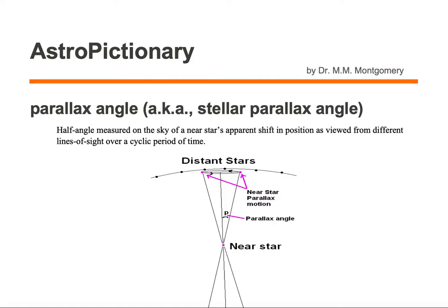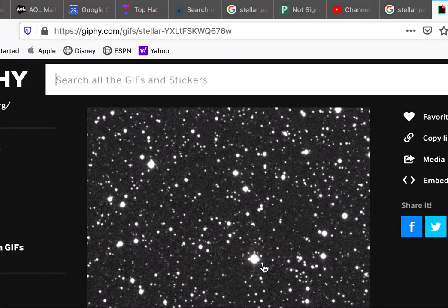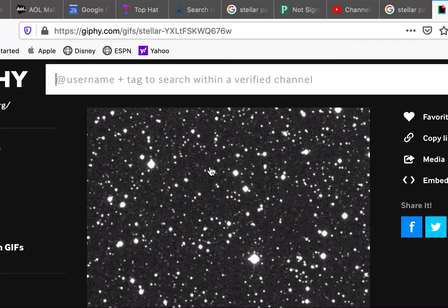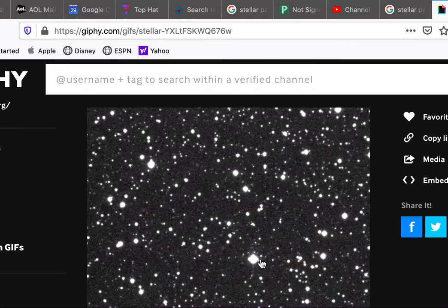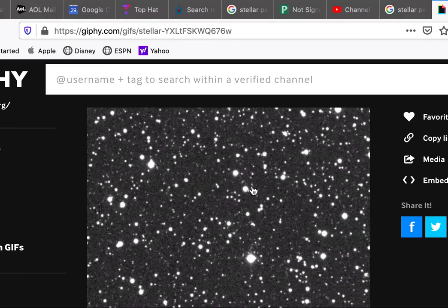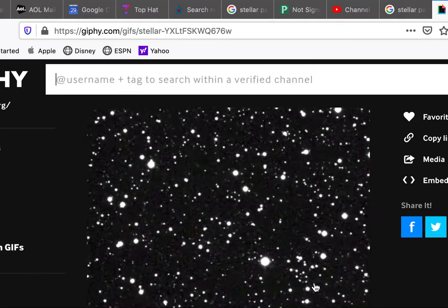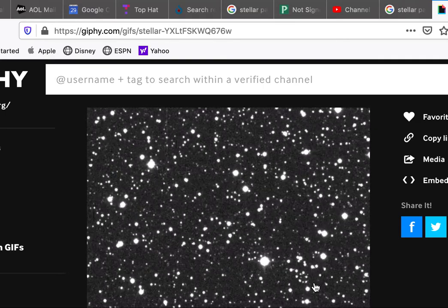So let's look at an example. Here we're looking at a near star relative to the background stars. Now the near star appears to shift in position relative to the background stars. The background stars aren't moving, but the nearby star looks like it is moving.